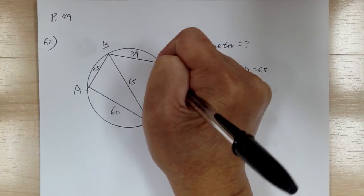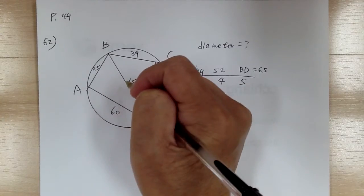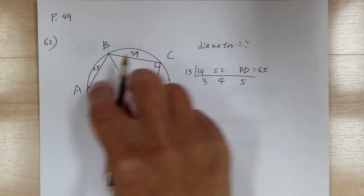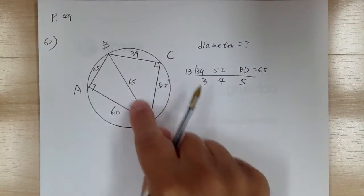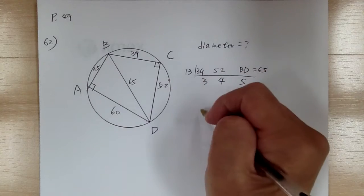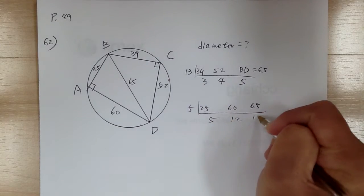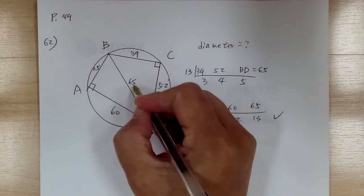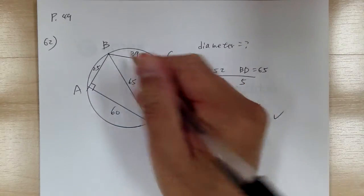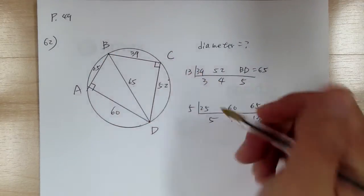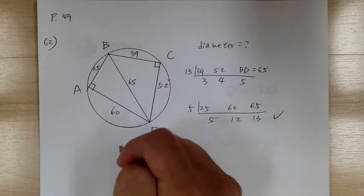Assuming BD is a diameter, both inscribed angles would be right angles. Check triangle with sides 25, 60, 65: factor out 5 to get 5, 12, 13 — that's a Pythagorean triple, so it checks out. Therefore BD = 65 is indeed the diameter of the circle.